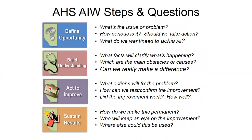Pictured here are the four major phases of the AHS AIW improvement model. Each phase flows sequentially and is guided by key questions — deliverables that must be met before moving to the next phase. First, you define the opportunity: what is the issue or problem? Then build understanding: what facts and information do you require? Next, act to improve: how do you propose to fix the problem? And lastly, sustain the results: how do you make this change permanent and monitor to ensure it continues delivering results?